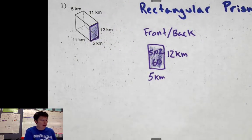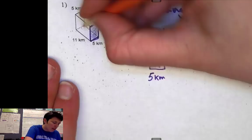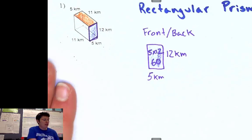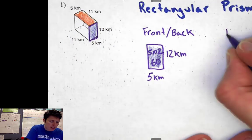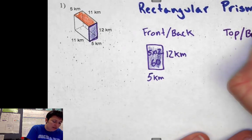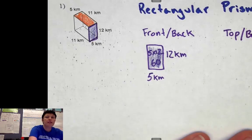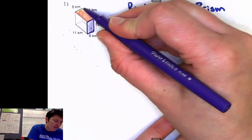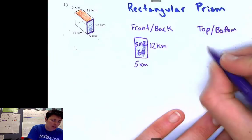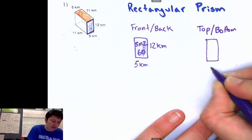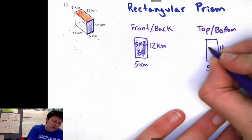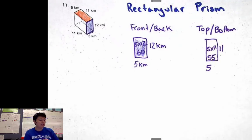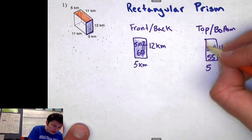Now let's do the top and bottom. I'm going to make the top orange. Here's the top — this piece right here, all in orange. The top and the bottom are going to match each other. For the top and bottom dimensions, it looks like it measures 5 by 11. So I draw a rectangle that is 5 by 11 and do 5 times 11, which is 55. The area of the top and the bottom is 55. I'll color that in orange so I don't forget.